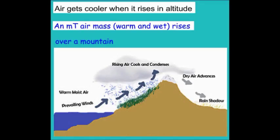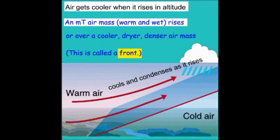So, as it comes back down the other side, we have drier, warmer air, and a rain shadow forms on the leeward side of the mountain.